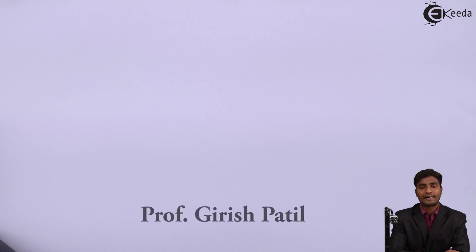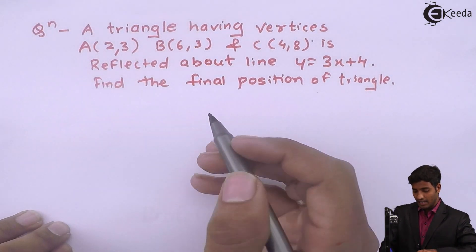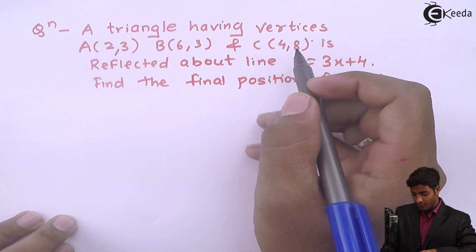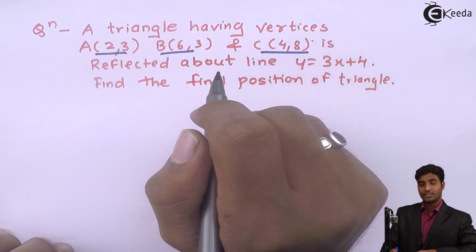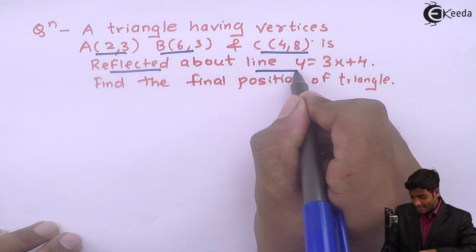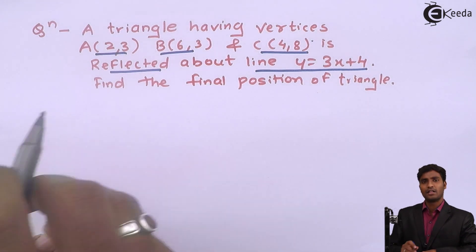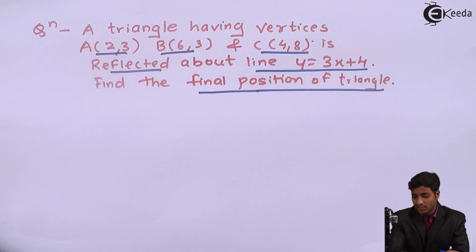Hello friends, we will solve a problem related to reflection. The problem is: a triangle having vertices A(2,3), B(6,3), and C(4,8) is to be reflected about the line y = 3x + 4. We have to find the final position of the triangle.